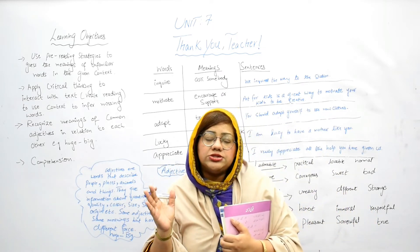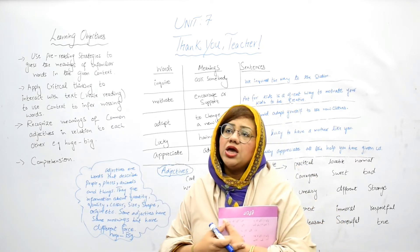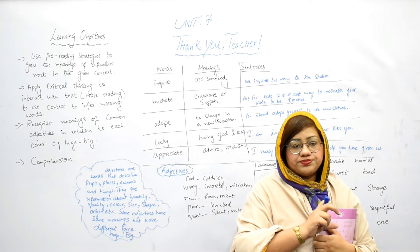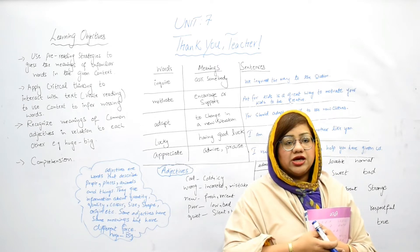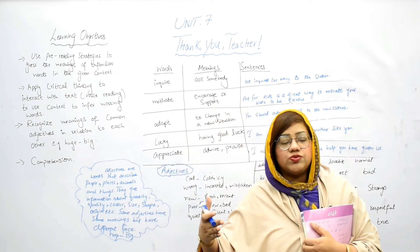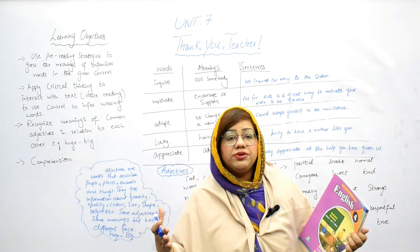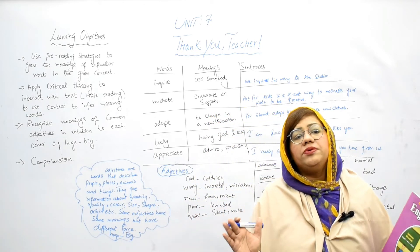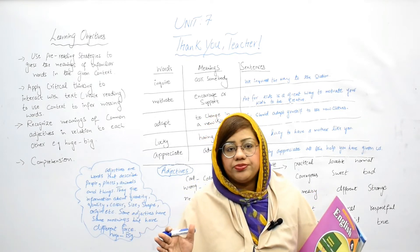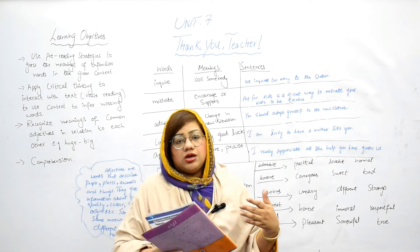Listen, students: some adjectives have the same meanings but they have different origins. For example, 'huge' obviously means a large one, and 'big' also means a large one. These two words have different origins, but when we inquire about their meanings, they have similar meanings. Similar meanings are called synonyms. I hope you have an understanding of that.